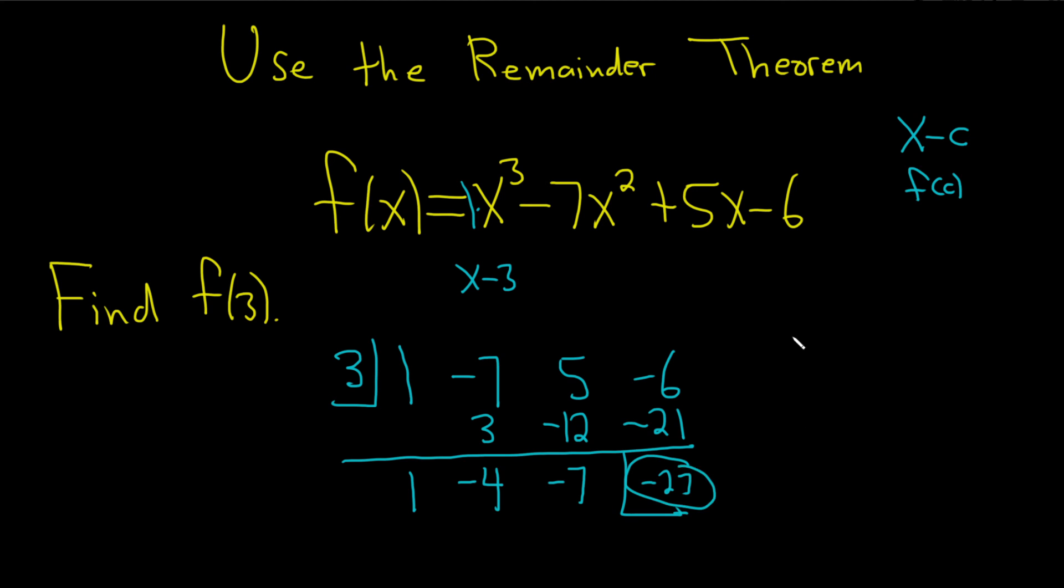So this is the remainder. So f of 3 is equal to negative 27. And that's it. I hope this video has been helpful to someone out there in the world. Good luck.